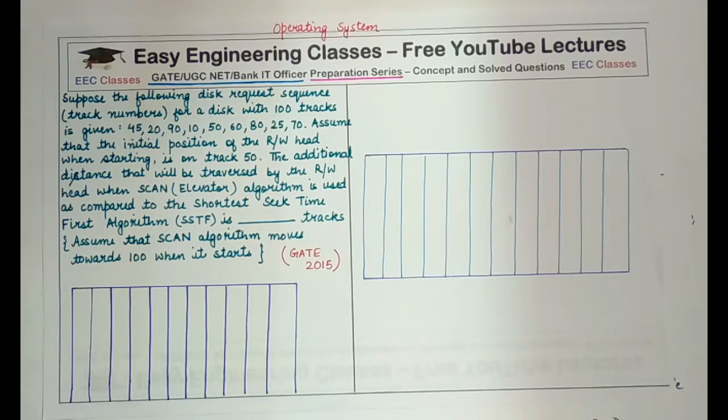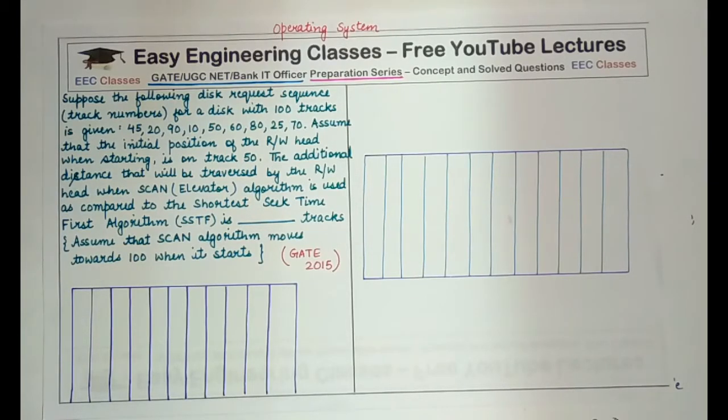So today we will be solving a question from operating system subject that appeared in GATE 2015. So the question is, suppose the following disk request sequence, that is track numbers for a disk with 100 tracks is given.